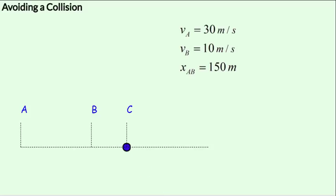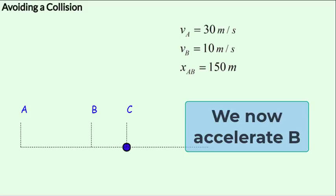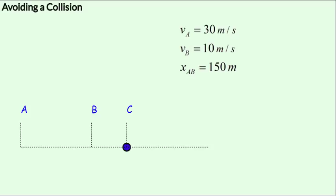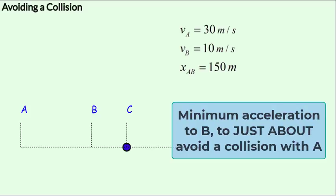If we now accelerate B in addition to its initial velocity of 10 meters per second, then the speed of B will begin to increase every instant. The question is: what minimum acceleration should we provide B with such that the collision between A and B is just about avoided?